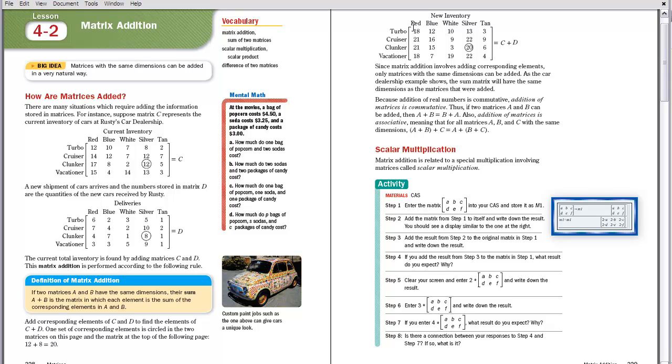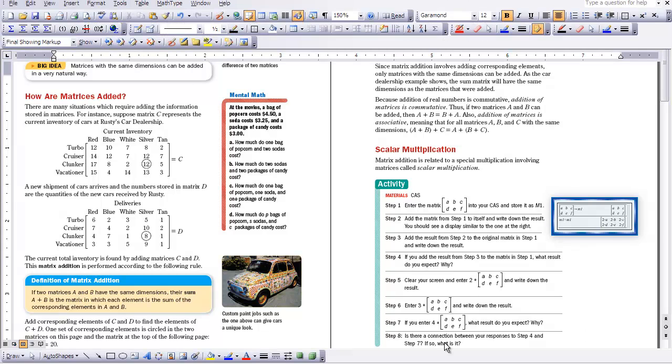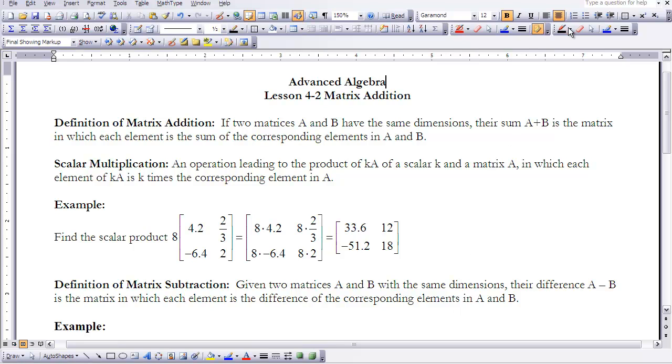The other piece that we want to look at is scalar multiplication. I'm actually going to go back to your Lesson 2 notes, and I have an example of scalar multiplication here for you. We want to take this matrix here that you can see me circling, and multiply it by 8. So what that means is that I'm going to take this matrix and add it to itself 8 times. So I'm going to take and multiply 8 times each element. So 8 times 4.2, 8 times 2.3, 8 times the negative 6.4, and 8 times 2.